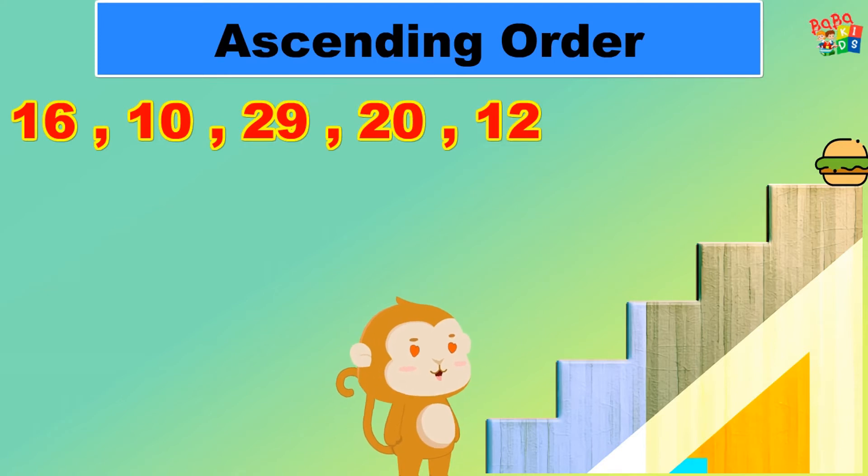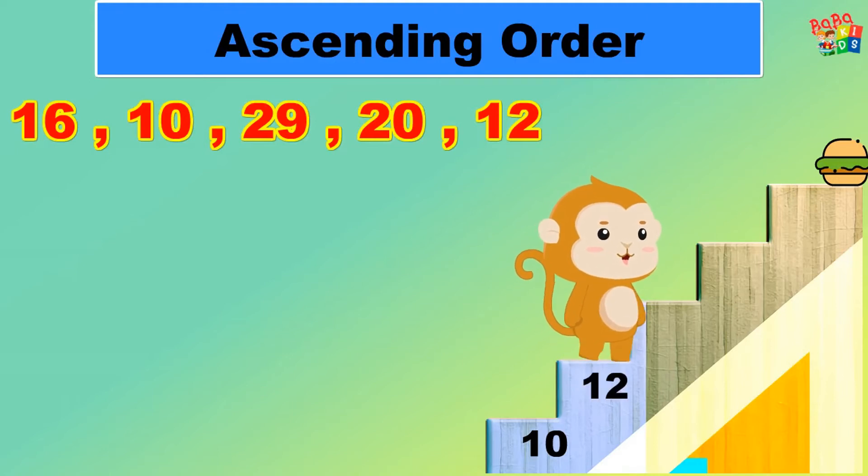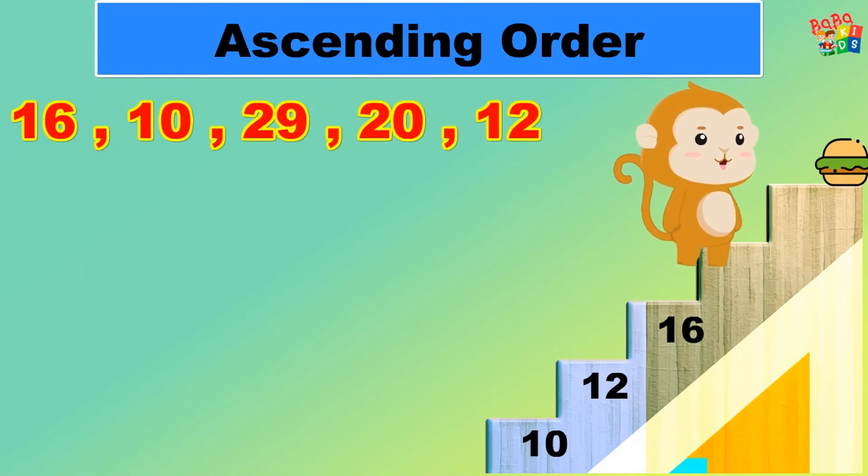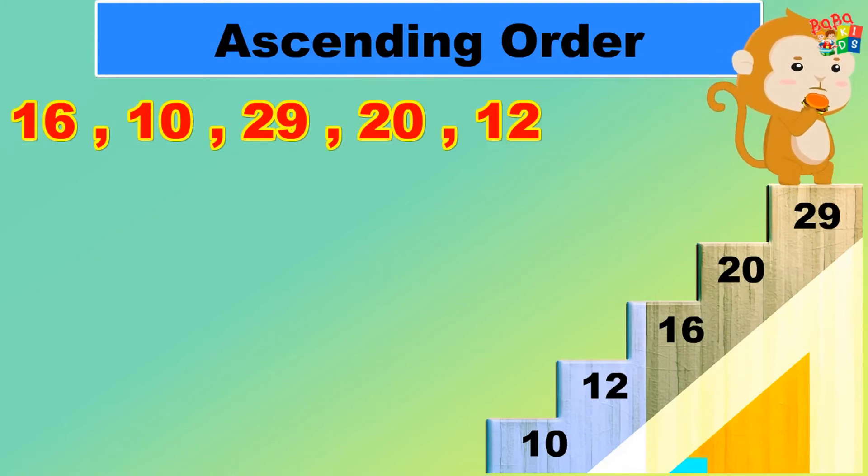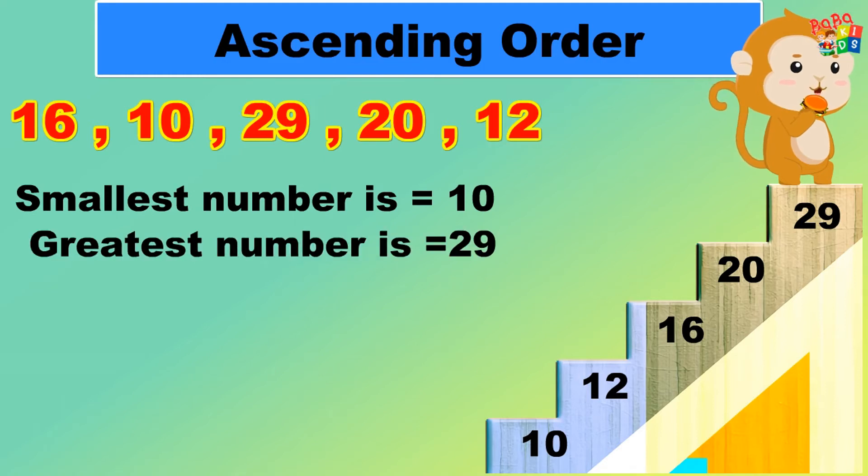So children, which number do you think will come first? Yes, the smallest number will come first. So the smallest number is 10. Then comes number 12. Next is 16, followed by number 20, and lastly number 29. So finally Mr. Chiku got his burger. Now smallest number is 10, and greatest number is 29.